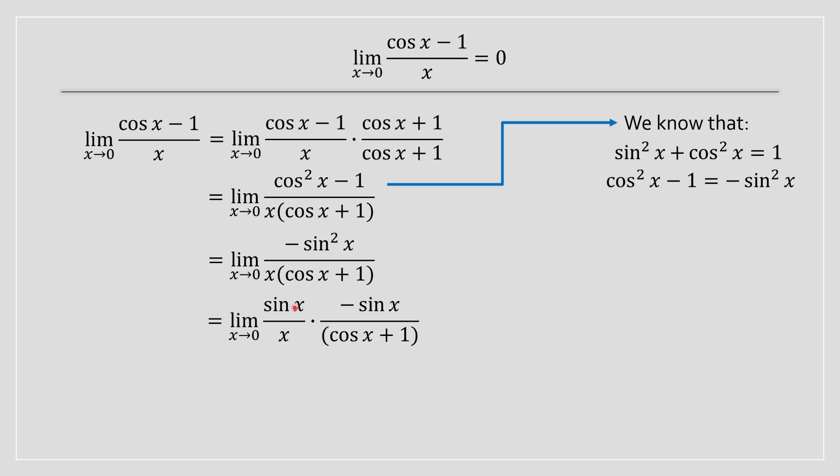We are then going to distribute the limit to both of these fractions, and therefore we're going to have two limits to solve for. The first limit is a pretty unique limit, and it can be solved via the squeeze theorem and geometry. We know that's going to be equal to 1.